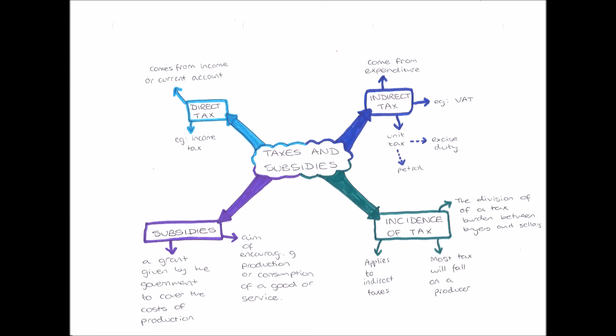And finally, in the bottom left, we have subsidies. Subsidies are a grant given by the government. The government gives money to cover the costs of production. So for example, it may cost me £100 to run my machine for an hour. I'm going to be paying about £40 of that, and the government is going to subsidize the other £60. It's going to give me that £60 so my costs of production are being covered.